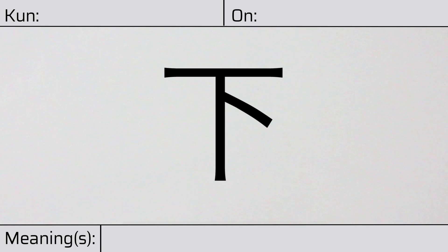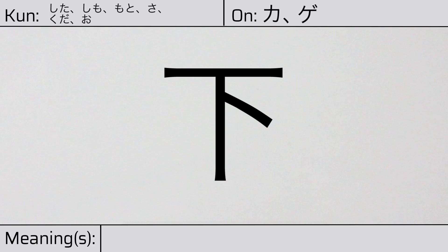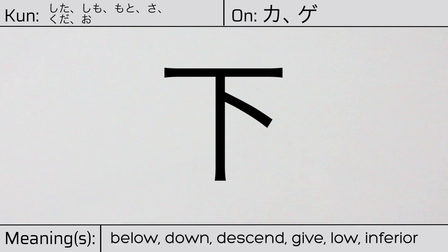Welcome to this lesson on Japanese kanji. Today, we'll be discussing this character. This kanji has kunyomi or Japanese readings of shita, shimo, moto, sa, kuda, or o, and it has onyomi or Chinese readings of ka or ge. This character has the meanings below, down, descend, give, low, or inferior.